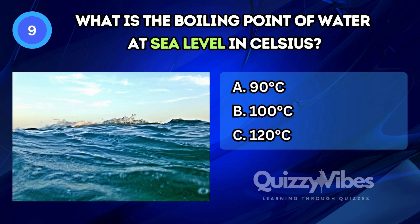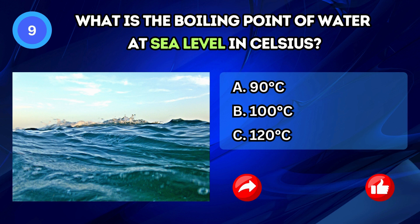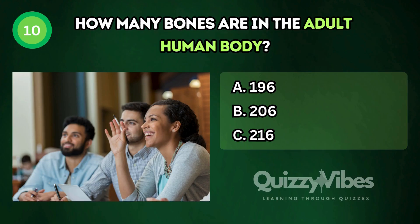What is the boiling point of water at sea level in Celsius? Answer B, 100 degrees Celsius. How many bones are in the adult human body?